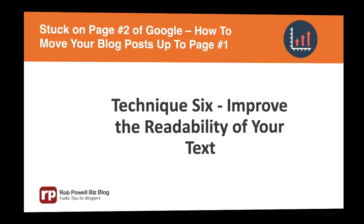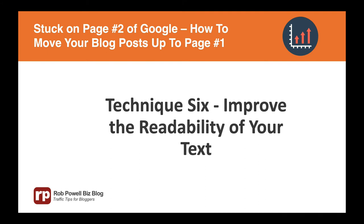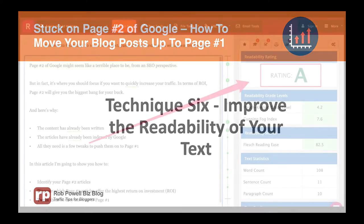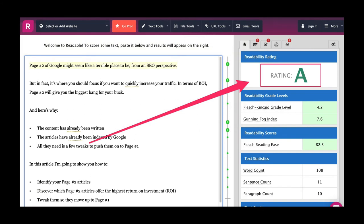Technique 6: Improve the readability of your text. How readable is your article? Are your sentences more than 20 words? Are your paragraphs more than four sentences? Do you have big slabs of text without headings to break them up? These are all things that stop people from reading your blog posts. Go to readable.com and do a readability test on your article. Adjust the text of your article until you get a score of A.